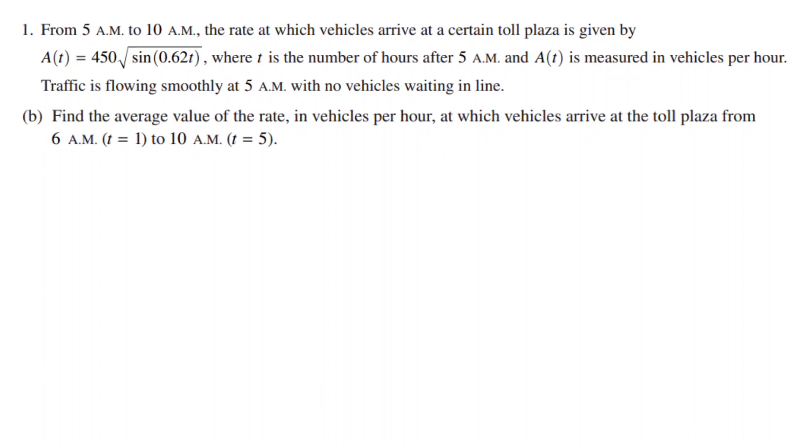In part B, we find the average value of the rate in vehicles per hour at which vehicles arrive at the toll plaza from 6am to 10am. To find the average value of a function, we multiply 1 over the given interval by an integral of the function. In this case, we take 1 over 5 minus 1 and multiply that by an integral of A(t) using the same bounds.